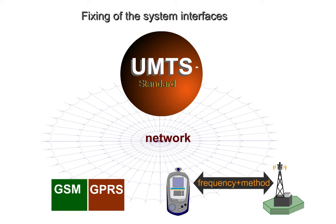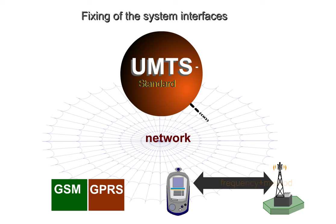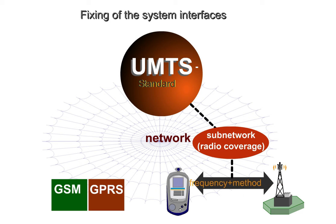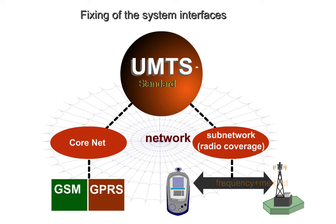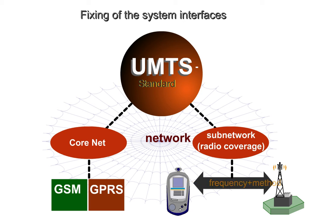Thus, the UMTS system consists of two main components: an independent sub-network for radio coverage and the core network, which provides routing and switching. Now, let's take a look at the basic UMTS structure.